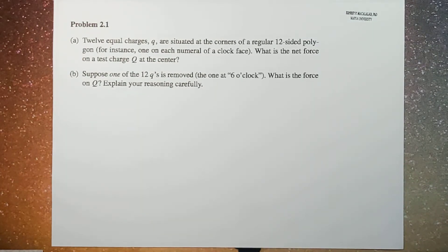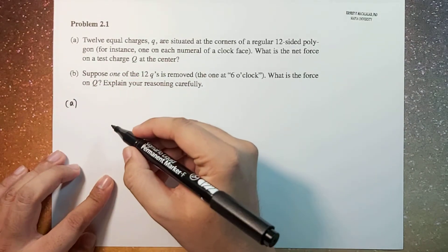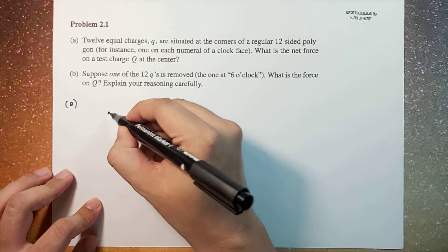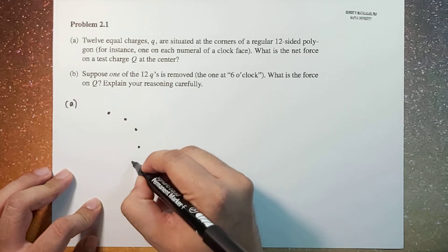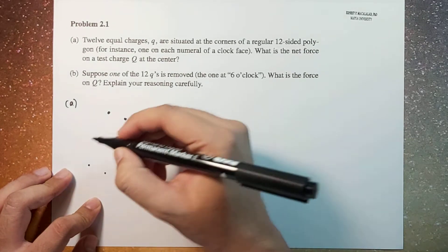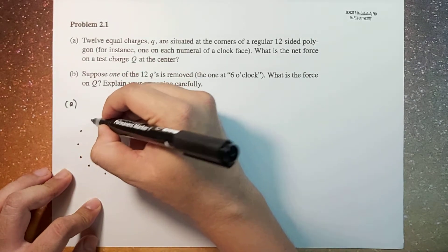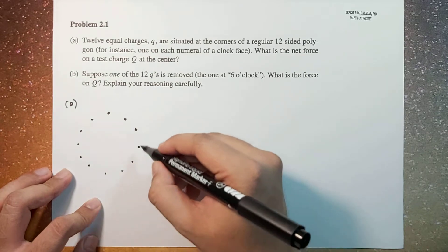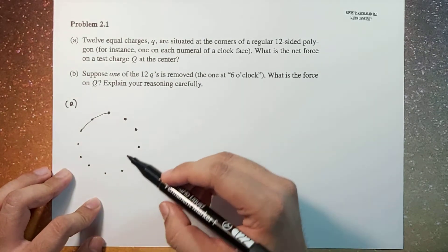Now, for example, if we're going for letter a, if we have let's say one, two, three, four, five, six, seven, eight, nine, ten, eleven, and twelve - so let's say these are the 12 sides of your polygon.